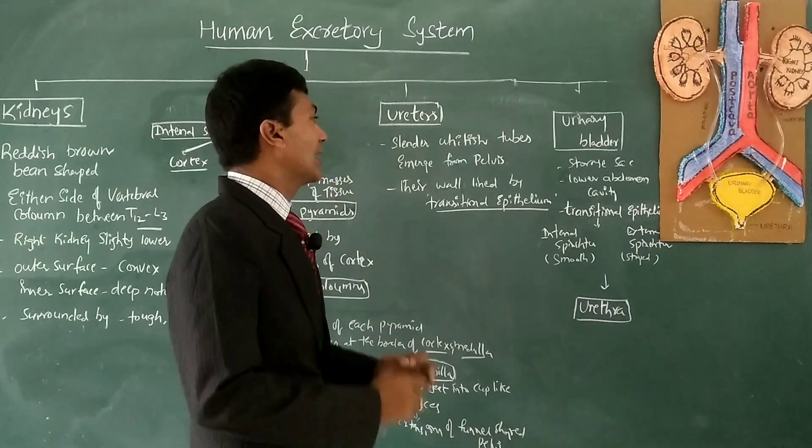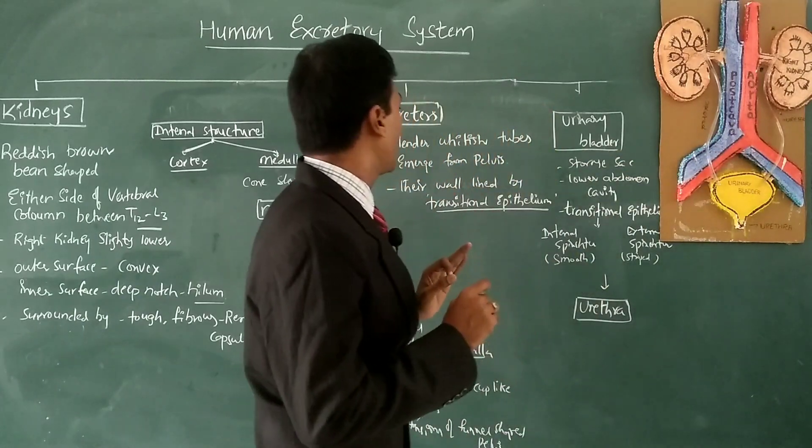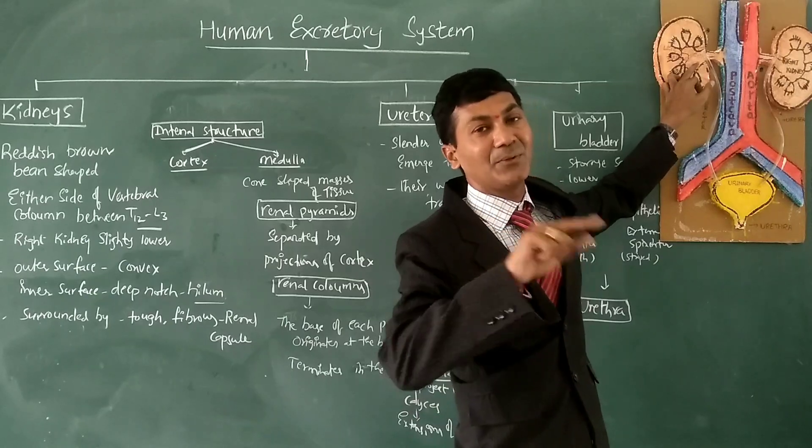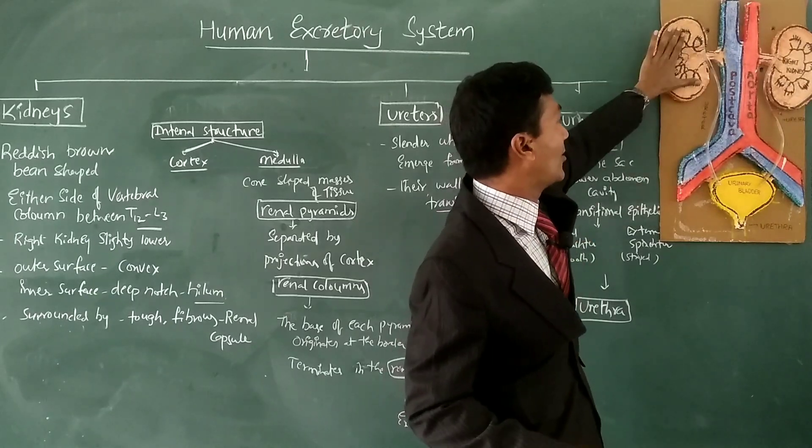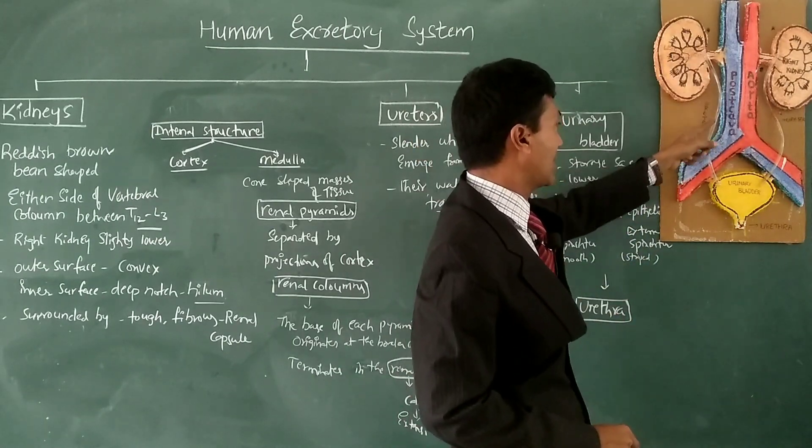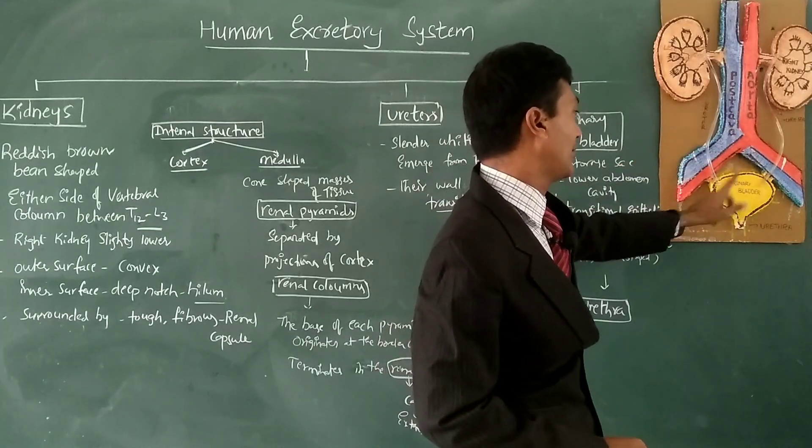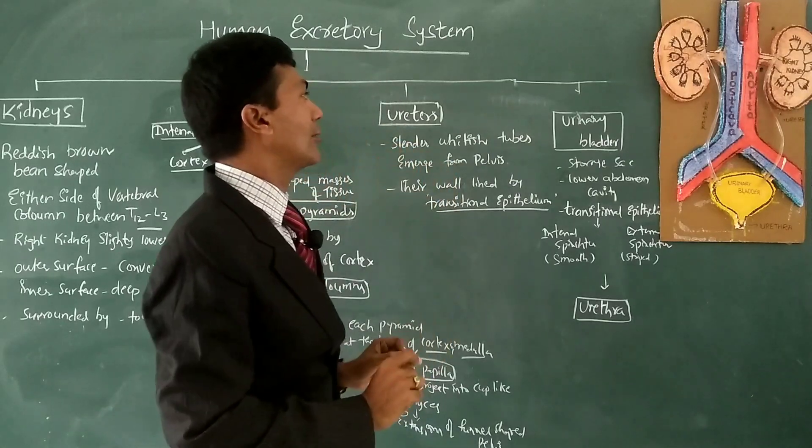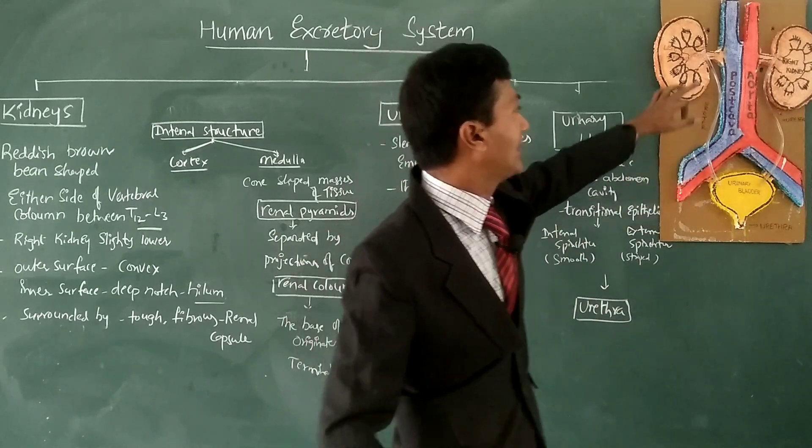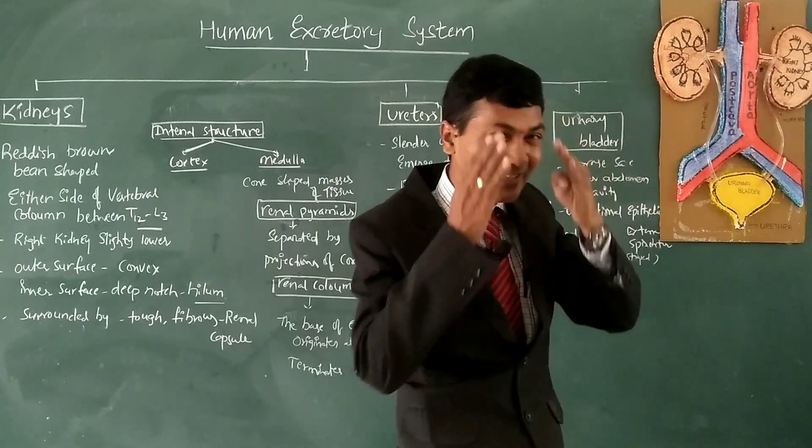Coming to the ureters, we have a pair of ureters which are slender whitish tubes. These tubes emerge from the pelvis region, from where urine is sent out from each kidney. The urine travels through each ureter into the urinary bladder. The inner lining of each ureter is lined by transitional epithelium.